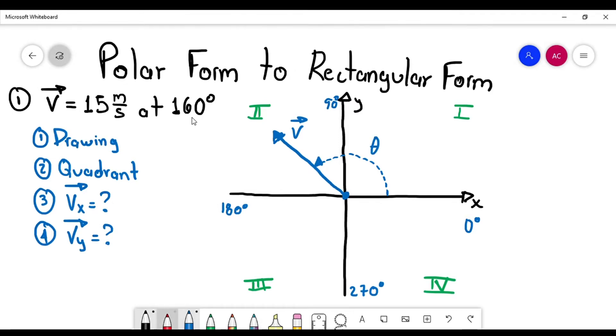And the rectangular components, guys, remember that the rectangular components are going to start also from the origin. So Vx goes to the left. Why to the left? Because the vector is pointing to the left. This is Vx. And this is Vy pointing upwards, because the vector is pointing upwards.